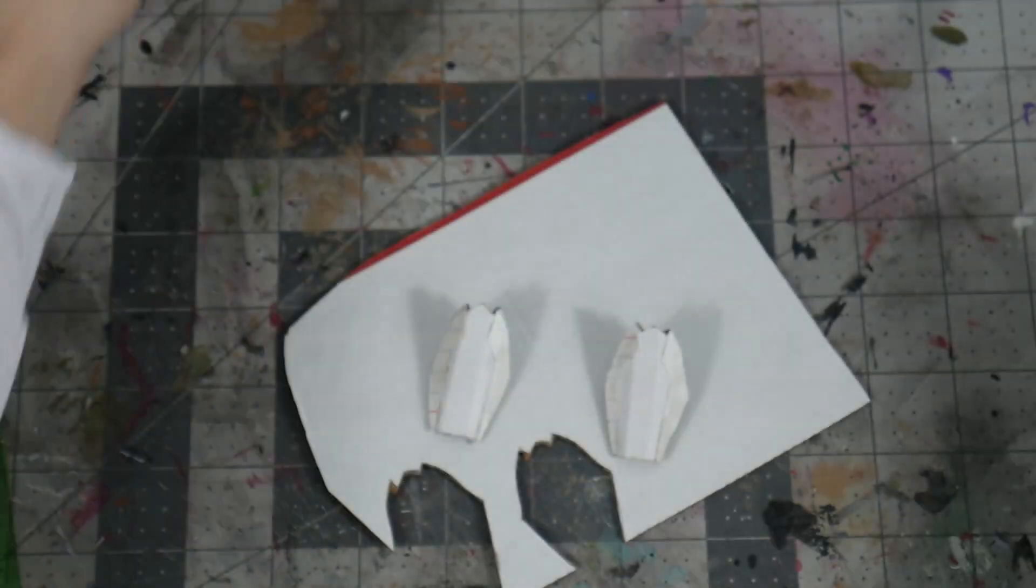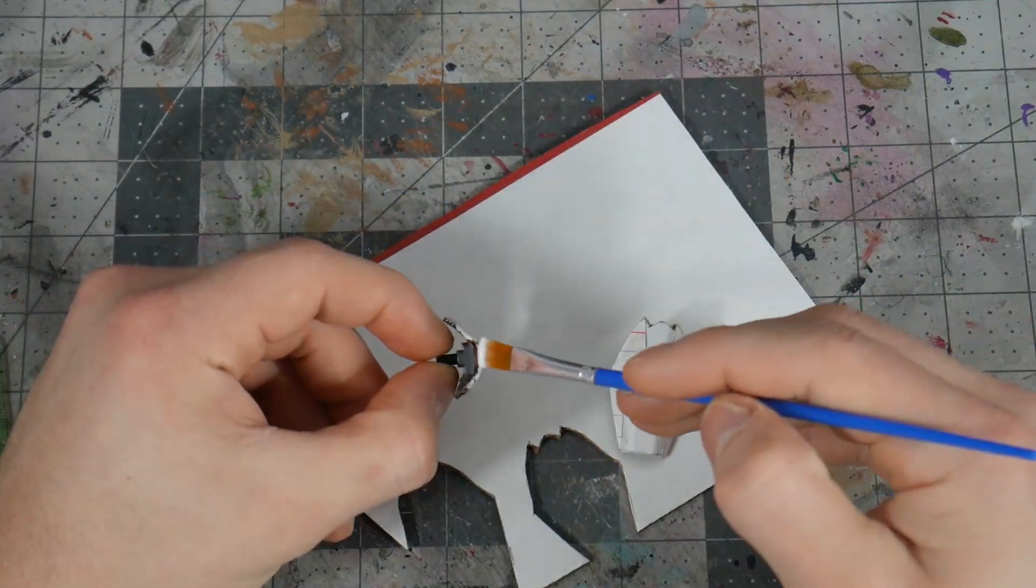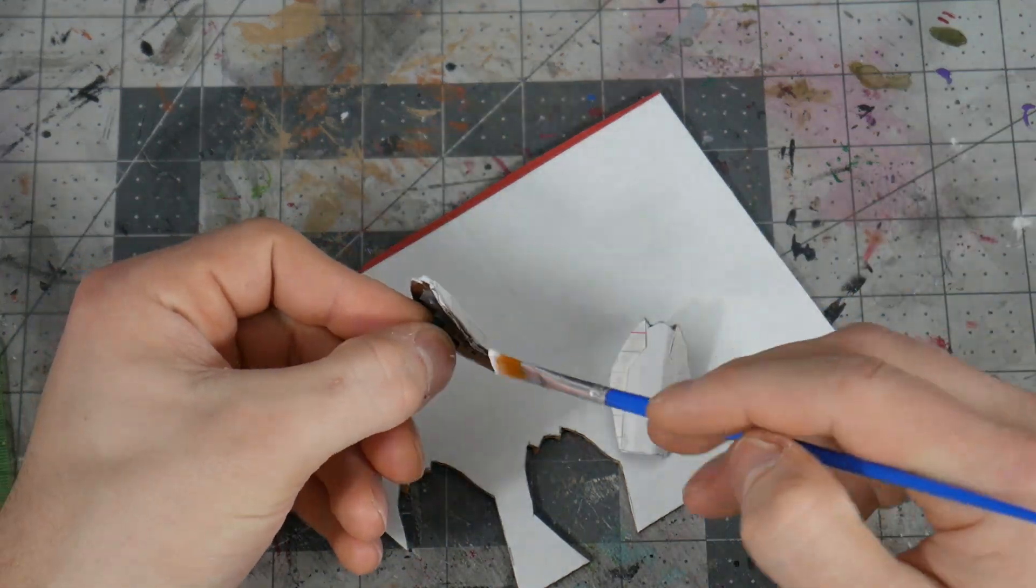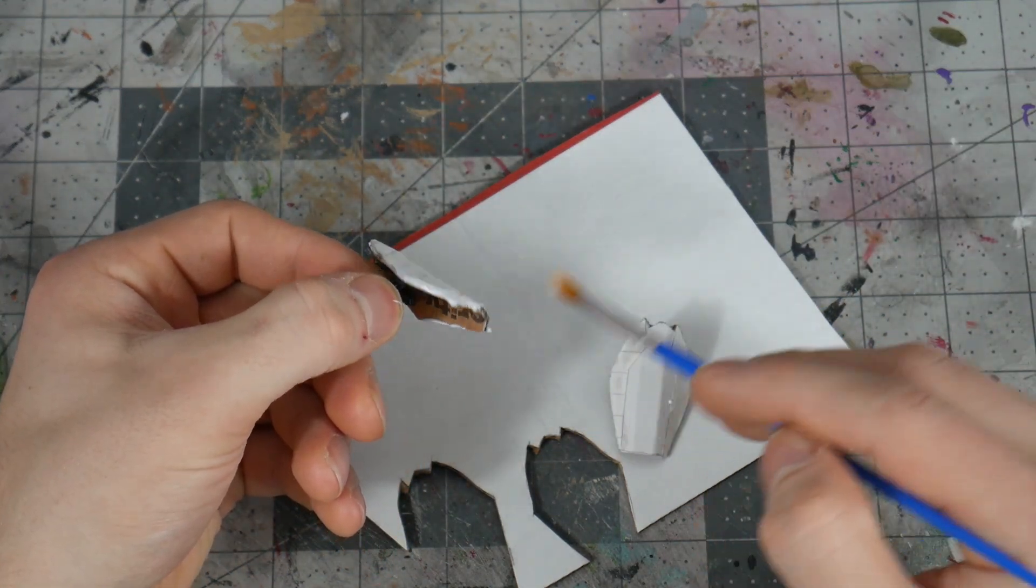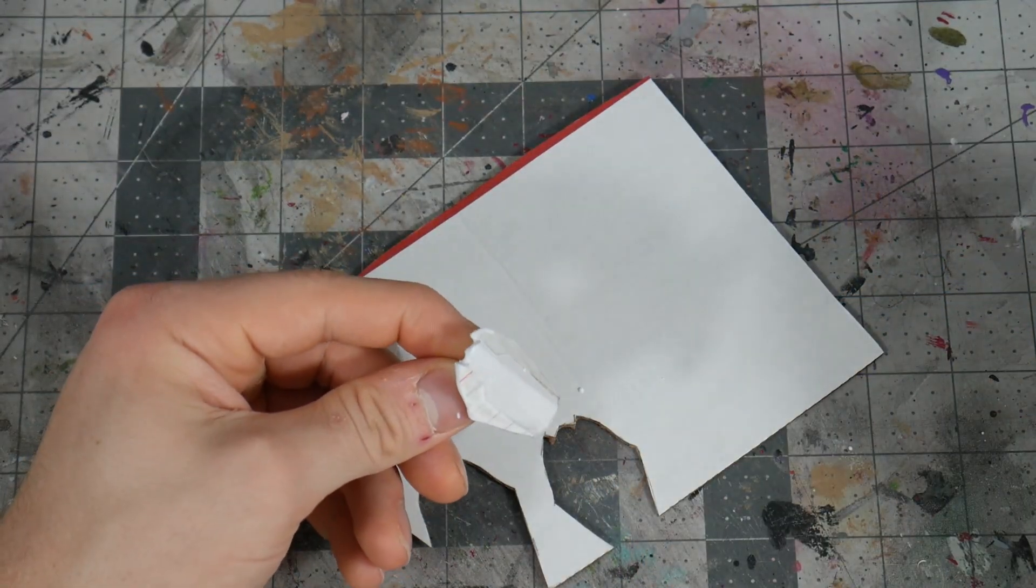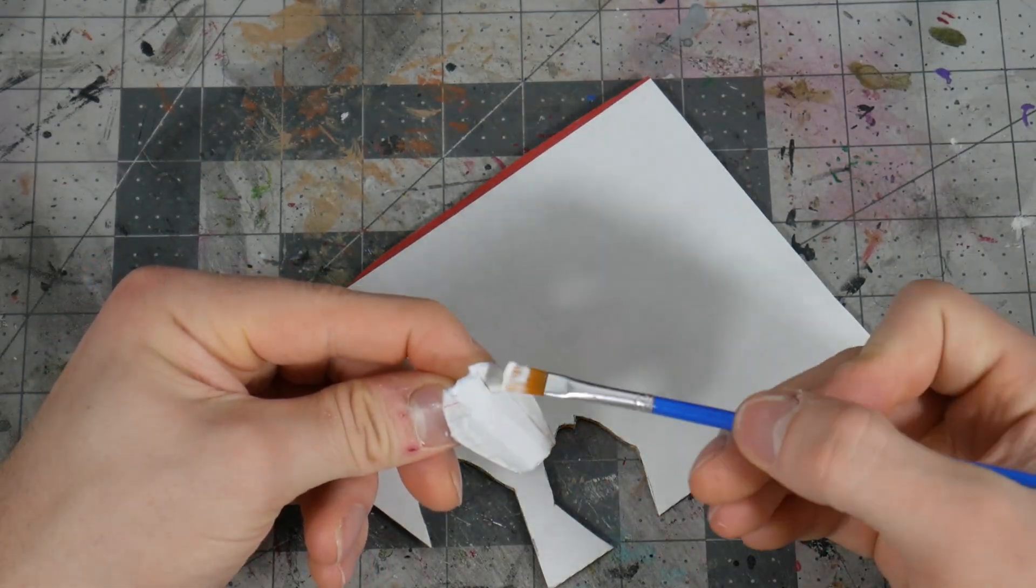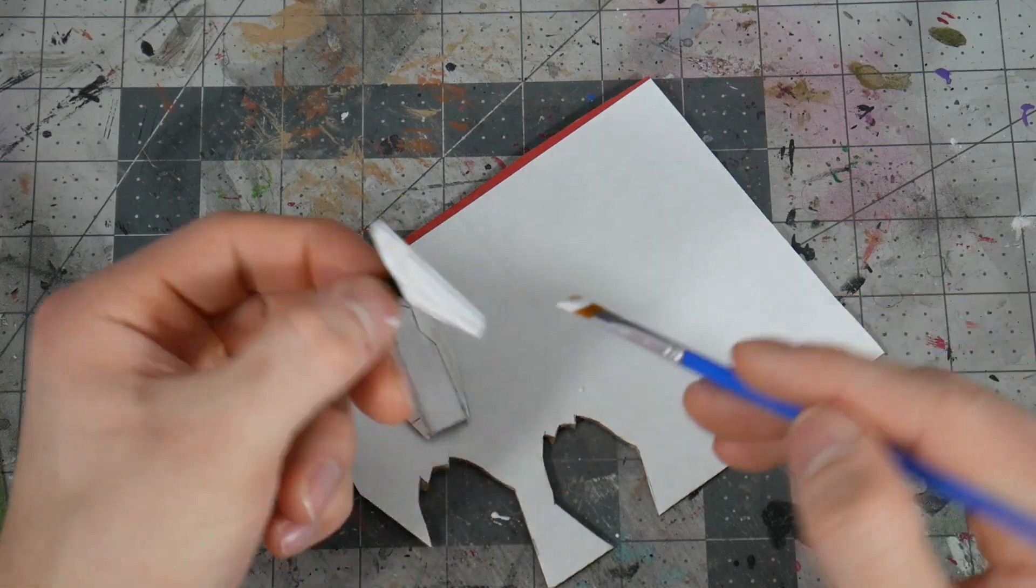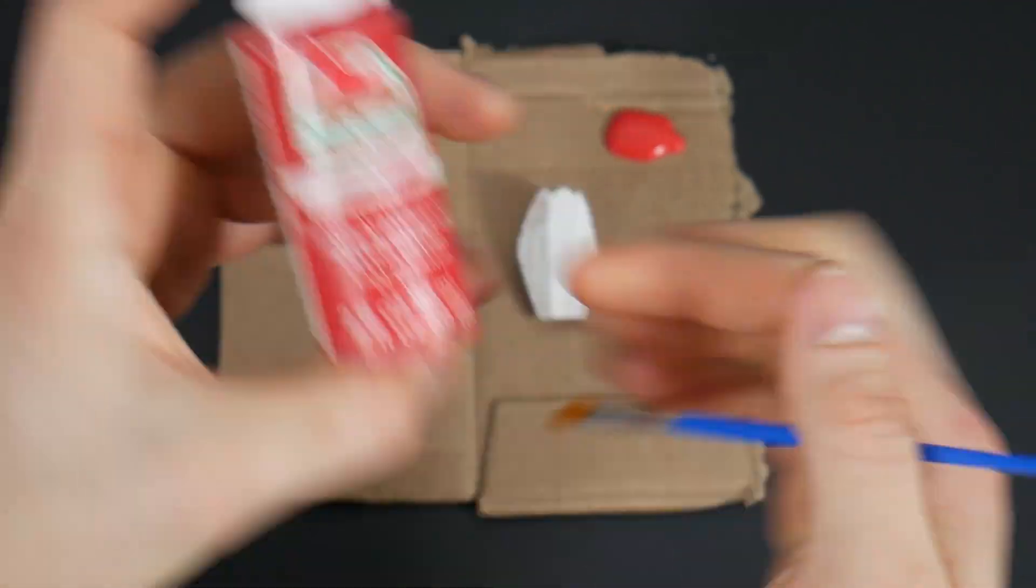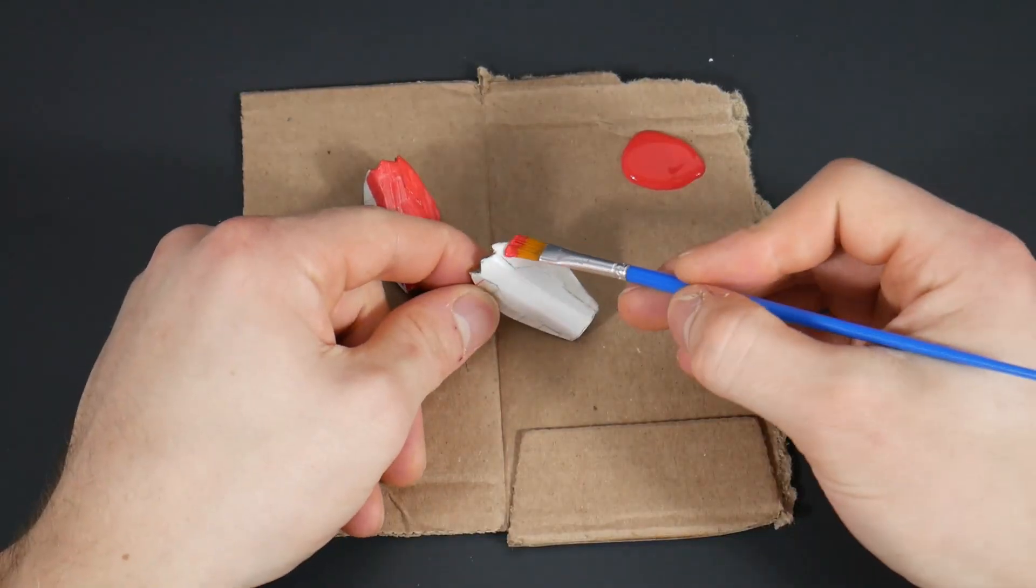I also added some Mod Podge to each one of the shields. This is basically just going to make it a little bit stiffer, harder, just make them better for longer. Now we're adding on some red paint to these shields. Cheap Apple Barrel 50 cent paint. Nothing crazy.